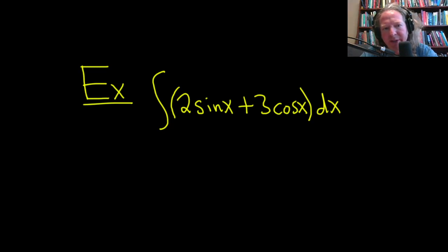In this example, we're going to integrate 2 times the sine of x plus 3 times the cosine of x. Let's go ahead and work through its solution.